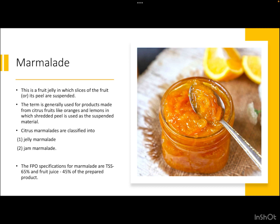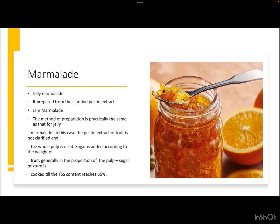The FPO or FSSAI regulations and specifications for marmalade are: TSS has to be 65 degree Brix — that is, for every 100 grams of product, 65 grams has to be solid — and the fruit juice or fruit pulp content has to be 45 percent of the overall composition. Jelly marmalade is prepared from the clarified pectin extract of the juice, and jam marmalade is practically made the same way a jam is made.